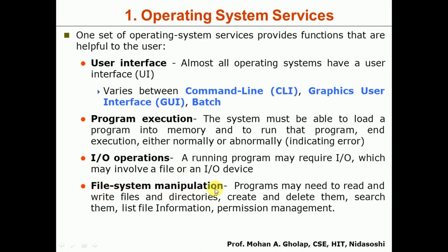The fourth service is File System Manipulation. Programs may need to read and write files and directories, create and delete them, search them, list file information, and manage permissions. During execution, a program may need to read or write file content, create a new file, delete a file, or search for files. The operating system provides a service called file system manipulation for all these file-related activities.